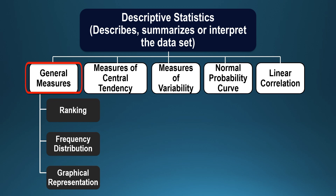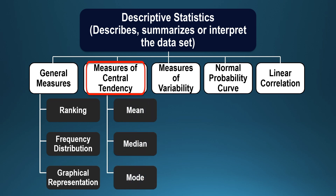Measures of central tendency refer to all those measures which are concerned with calculating the average or the typical performance of the sample selected for the study. And these include mean, median, and mode.